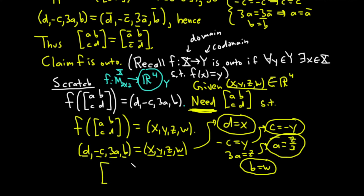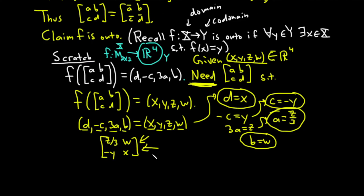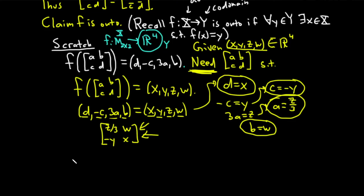This is going to be our matrix in the proof. Now we write the proof formally, following the definition 100%.